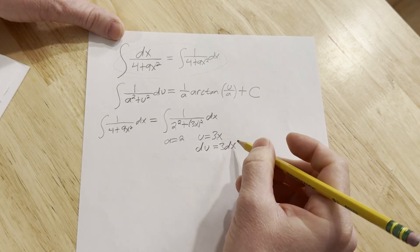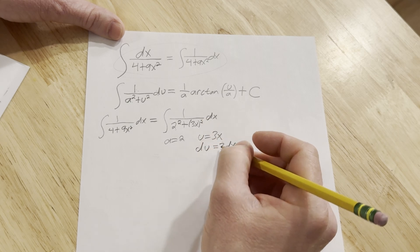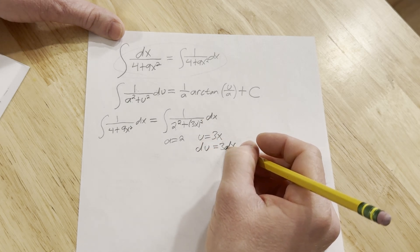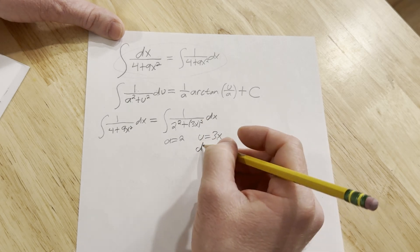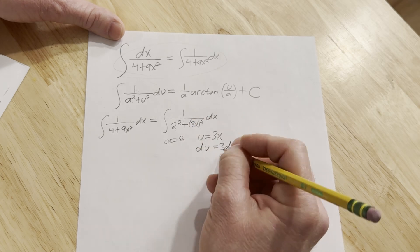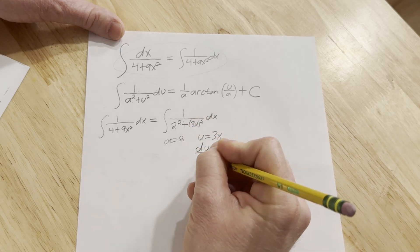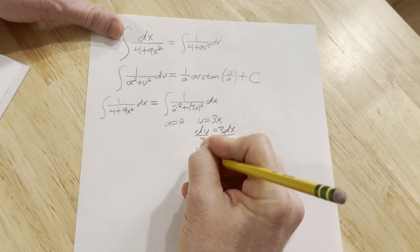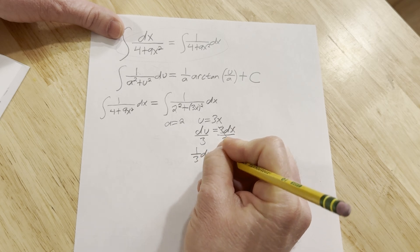Now we don't have a 3 here in the integrand. So when you get to this step, and you're doing u substitution, the goal is to make this look like whatever is here. So we're going to divide both sides by 3. So we have 1/3 du equals dx.